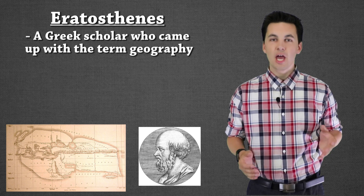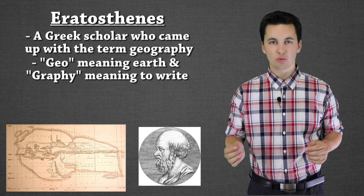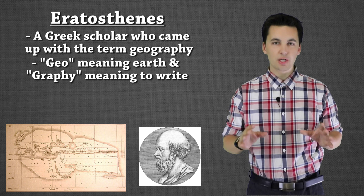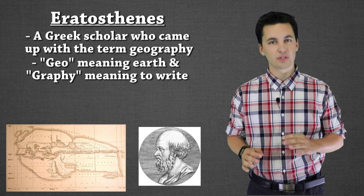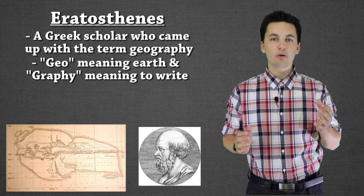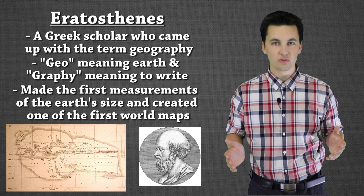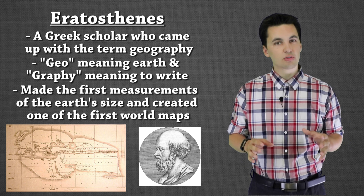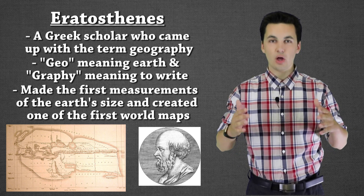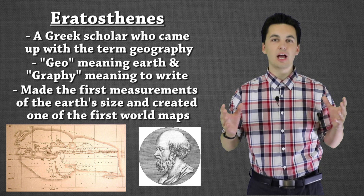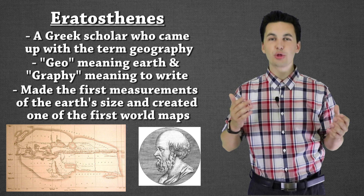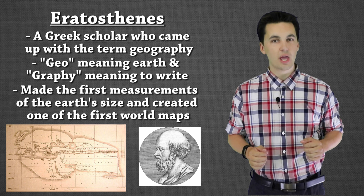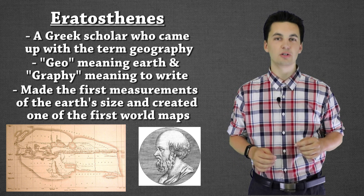Our first cartographer and geographer is Eratosthenes. He was a Greek scholar who actually came up with the word geography — geo meaning earth and graphing meaning to write, to write down the earth. Eratosthenes is credited for being one of the first people to actually record the earth's surface and create the first world map. The world map he created was very different from what we would have today — back then not everything had been discovered yet, and early maps sometimes depicted the earth as flat, eventually evolving to become round, with mythical creatures and monsters marking the unknown edges. So Eratosthenes created the term geography and is credited with making the first world map.